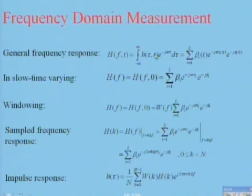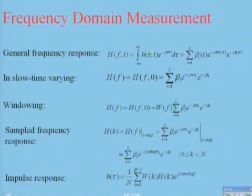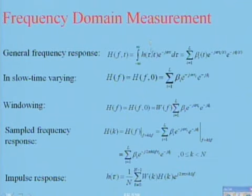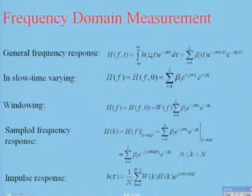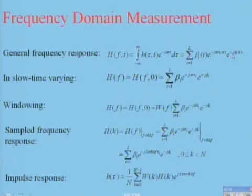Remember that the impulse response is a function of two things — it's a two-dimensional function. One is t, the real time; the other is tau, the delay of arrival, which is associated with different paths and their lengths. If I take the Fourier transform with respect to tau, that gives me H(f). The channel impulse response for indoor areas is like a bunch of impulses arriving — and the Fourier transform of impulses is a bunch of phasors, each with an amplitude, phase, and time of arrival.